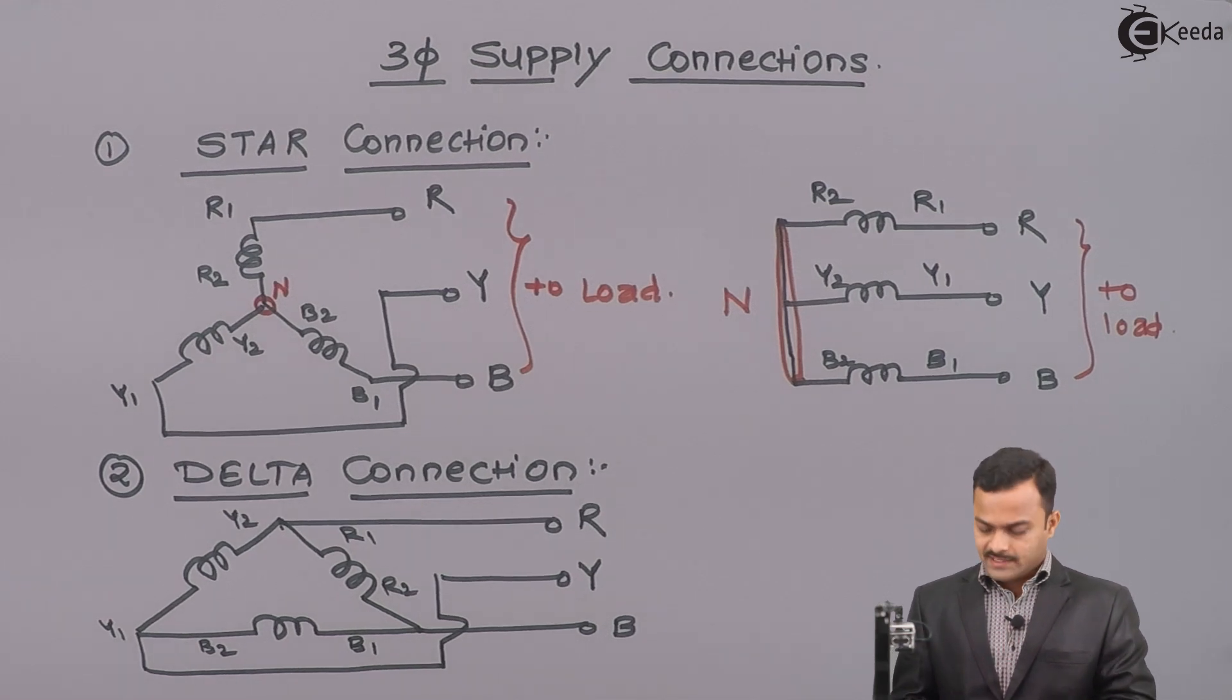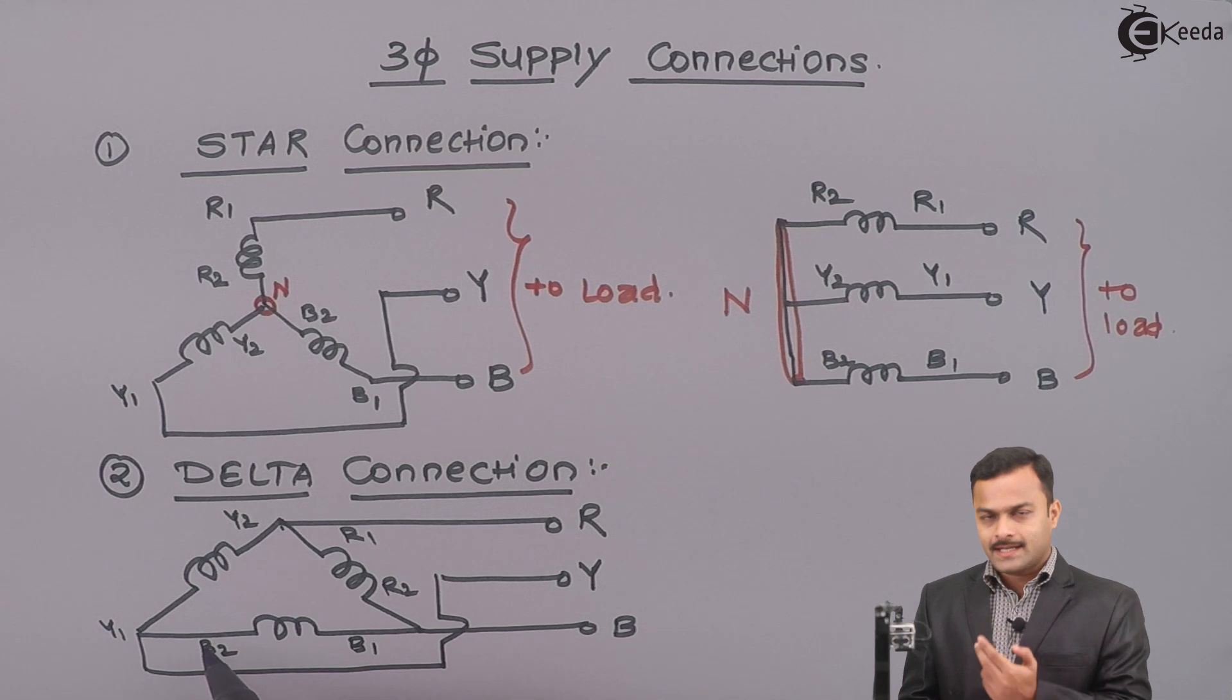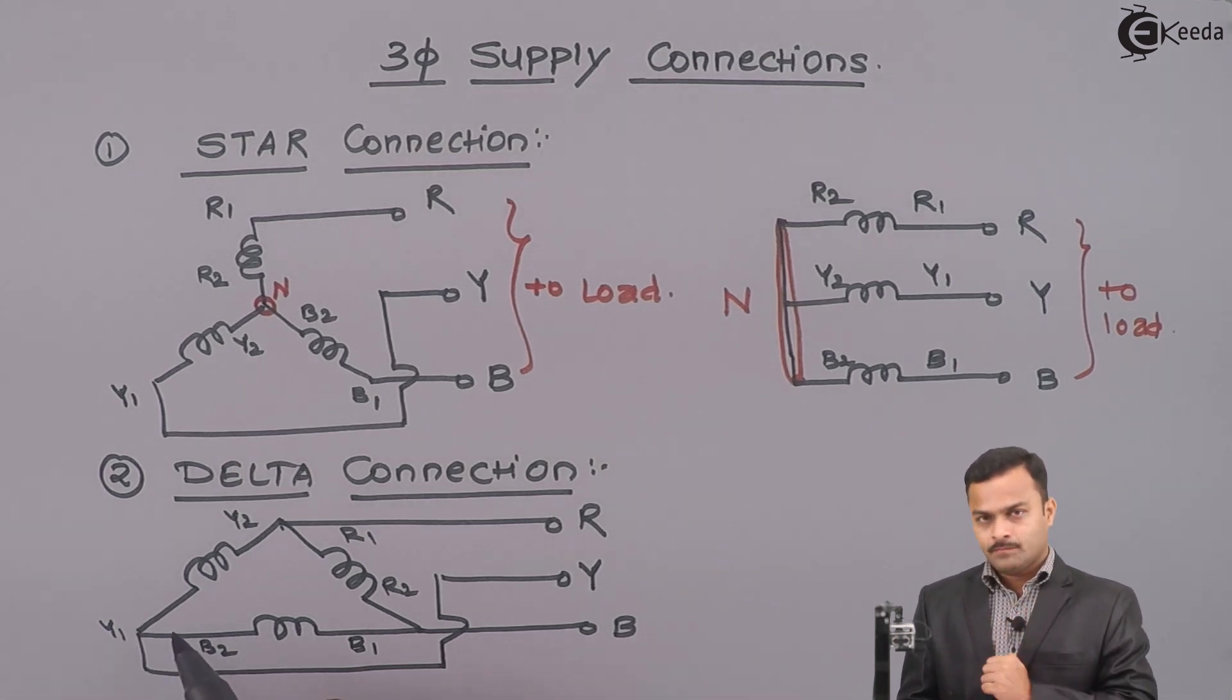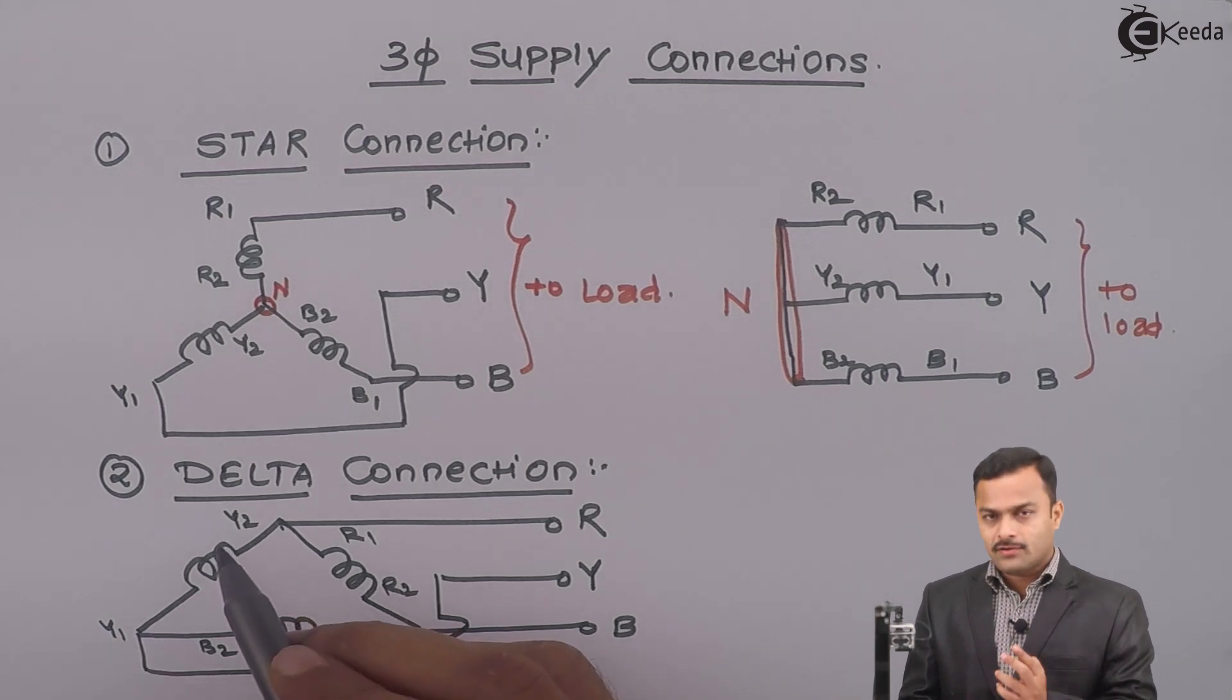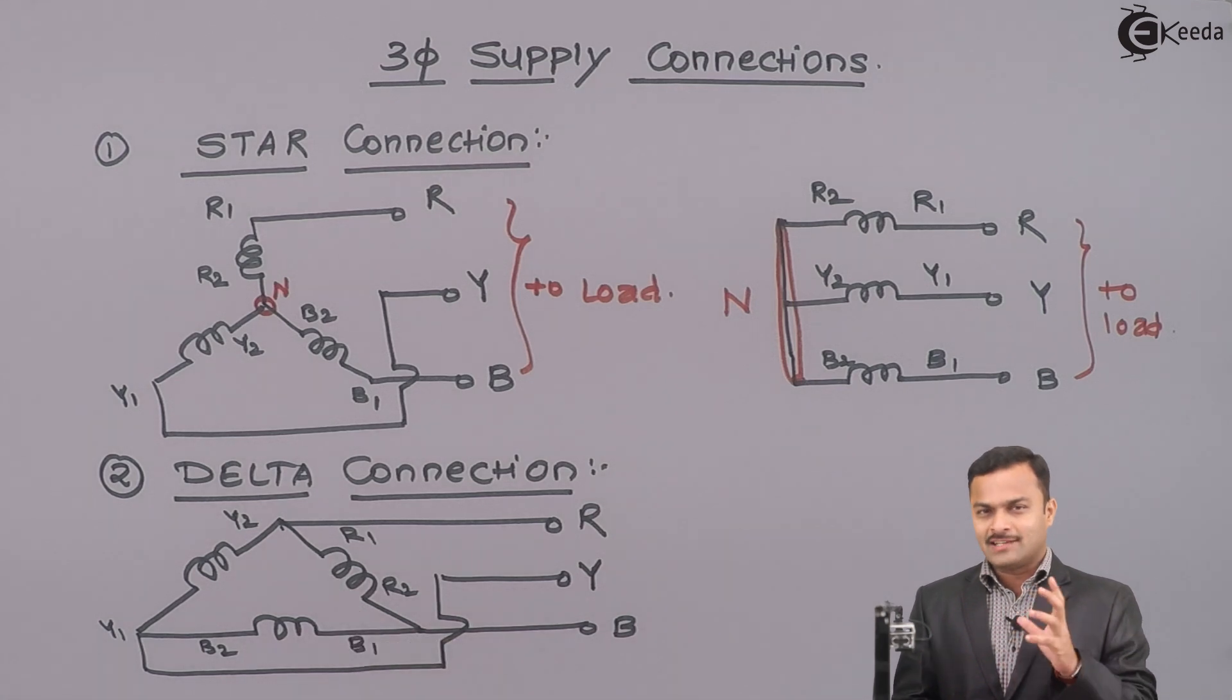Delta is formed such a way that second end of first winding is connected to first end of second winding. And second end of second winding is connected to first end of a third winding. And second end of third is connected to first end of first. It's a bit confusing, but just remember that three windings are connected such a way that they form a closed loop. Then that connection is called as a delta.